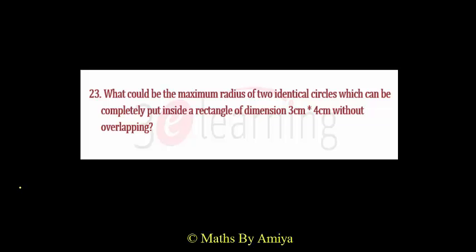Hello friends, welcome to the world of Maths by Amie. In this learning concept video, we try to solve a question and learn a concept. The question is: what could be the maximum radius of two identical circles which can be completely put inside a rectangle of dimensions 3 cm and 4 cm without overlapping?